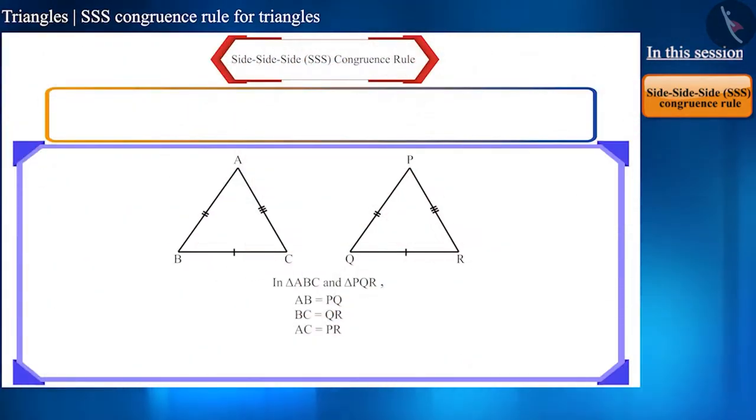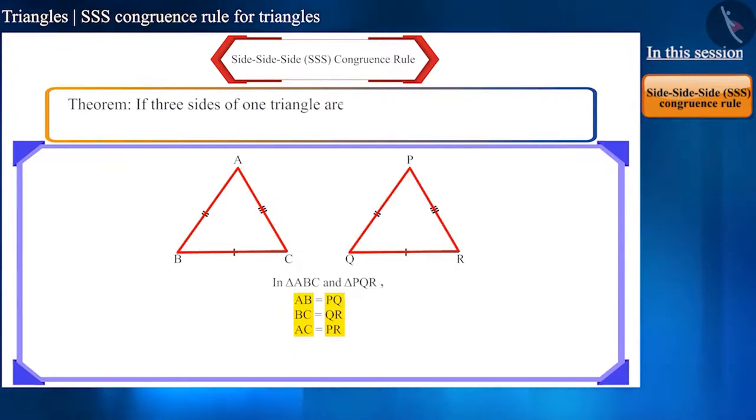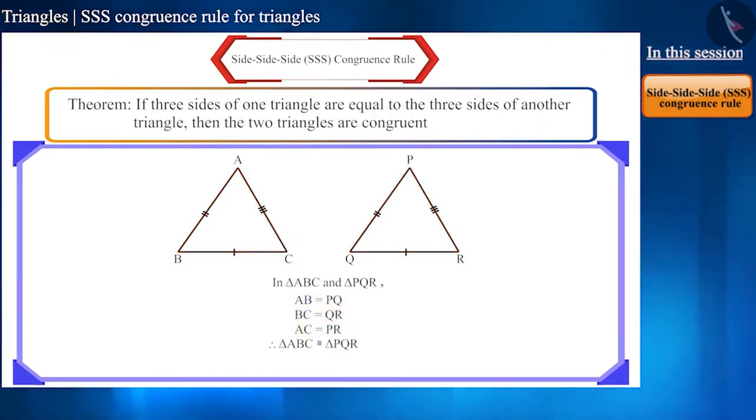We can write this conclusion in the form of a theorem. If three sides of one triangle are equal to the three sides of another triangle, then the two triangles are congruent. This is called the side-side-side or SSS congruence rule.